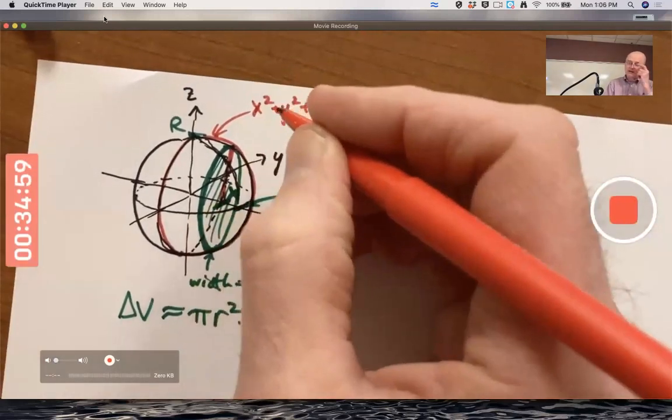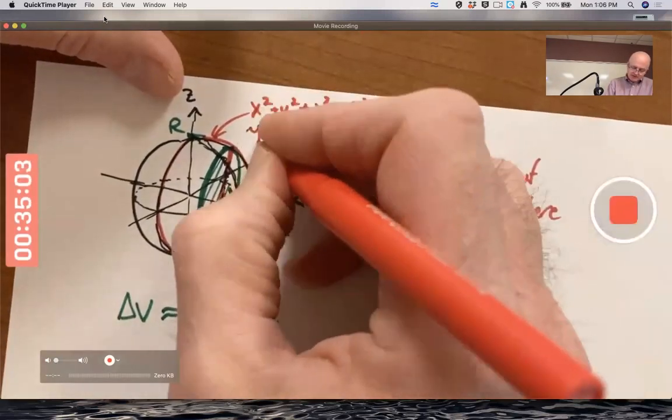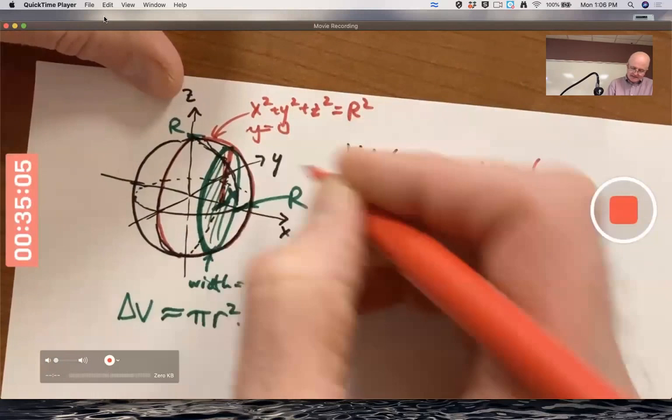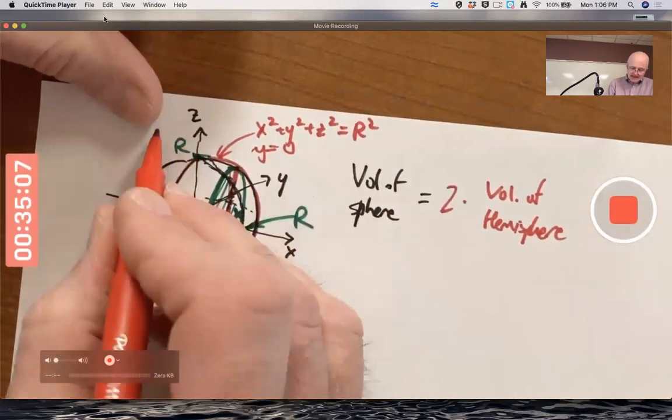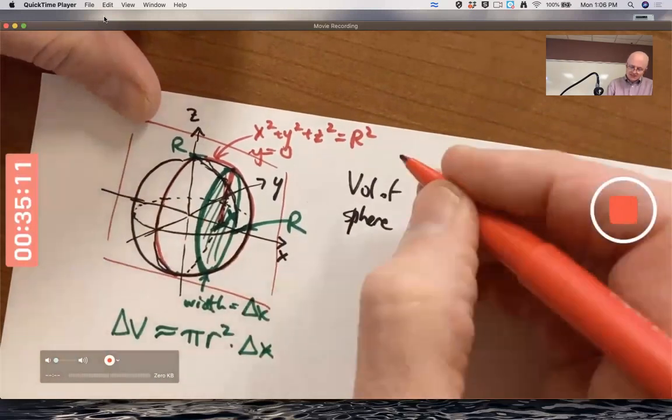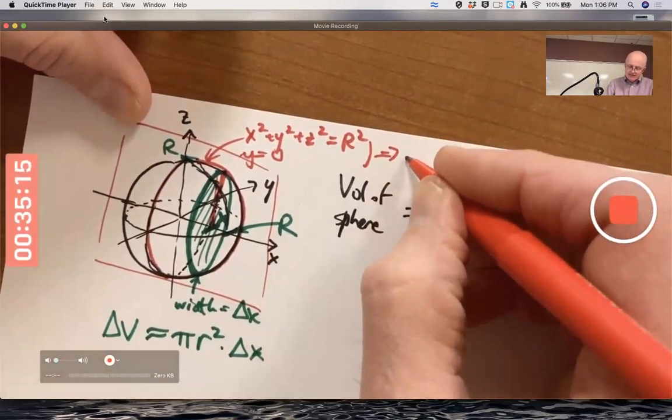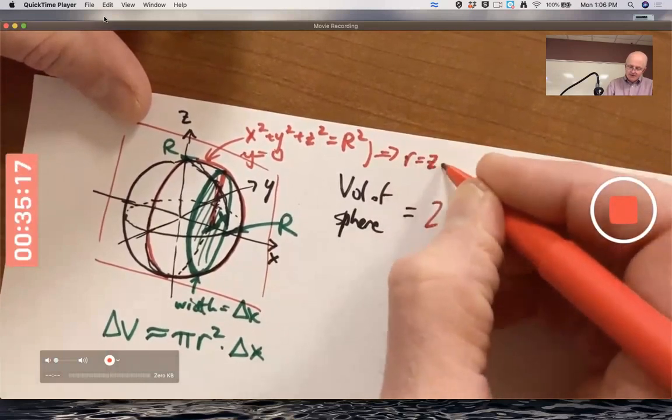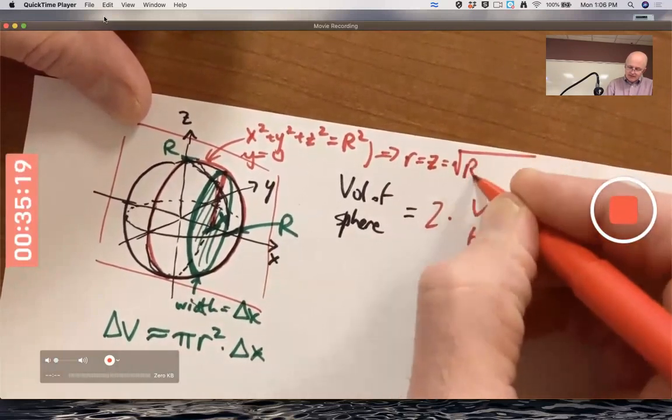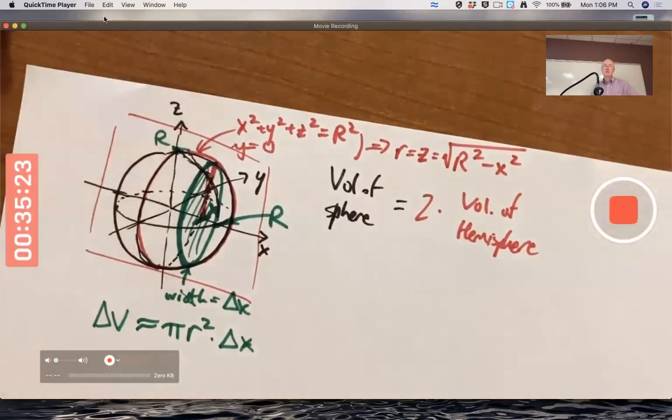The distance formula does generalize to higher dimensions. And if you set y equal to zero, so you're pretending that you're in the xz plane here, and solve for z, that'll be the same as the radius. Z will be the same as the radius. It will be √(R² - x²), which is the same radius as the circle.